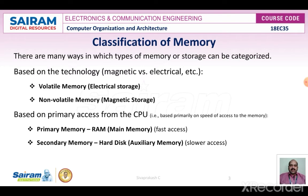There are many ways in which types of memories or storage can be classified. The first classification is based on technology: it may be magnetic or electric — that is, volatile memory or non-volatile memory. Volatile memories are electrical storage and non-volatile memories are magnetic storage. Based on primary access from the CPU — that is, how fast the memory can be accessed — we classify memory as primary memory and secondary memory.